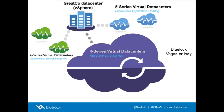GreatCo uses just about every BlueLock product we've ever made. They have their own vSphere environment here in the Midwest. They've also got some 2-series virtual data centers that we host for them — used for development testing and ad hoc needs. They're also hosting a couple of production apps in 5-series virtual data centers, which are more about production and four nines of uptime. What we're going to feature today is their use of a 4-series virtual data center, which is a backup recovery target — replicating their vSphere environment over the network into a BlueLock 4-series VDC at a BlueLock facility in Las Vegas.